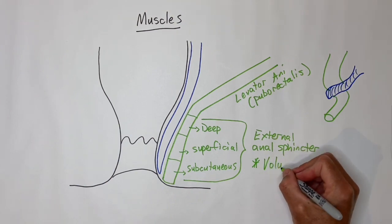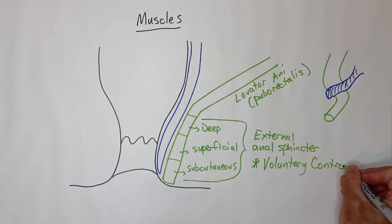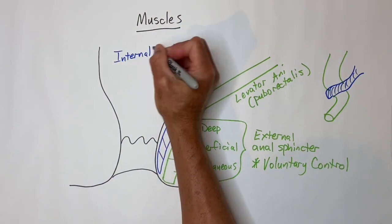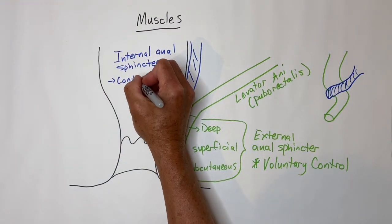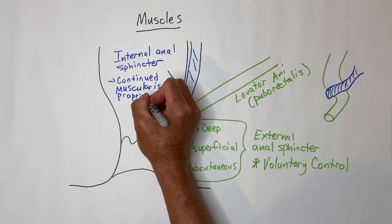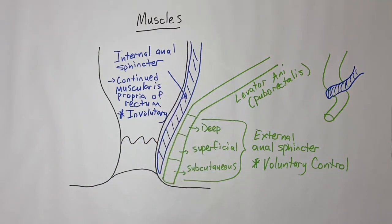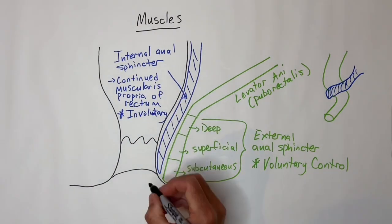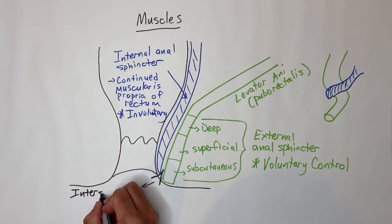The external anal sphincter is under voluntary control. The internal anal sphincter is a continuation of the muscularis propria of the rectal wall and is under involuntary control. The groove between the two can be felt as the intersphincteric groove on the anal margin skin.